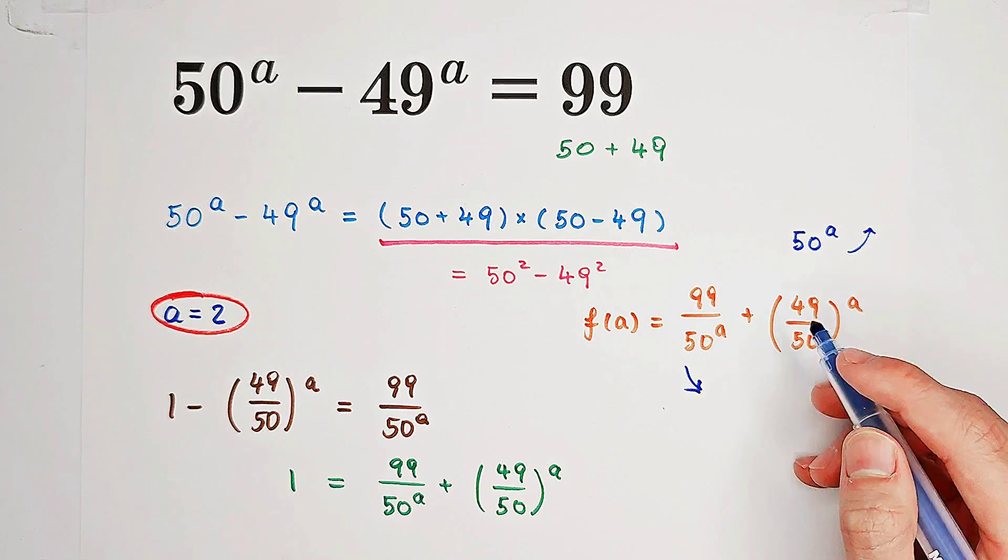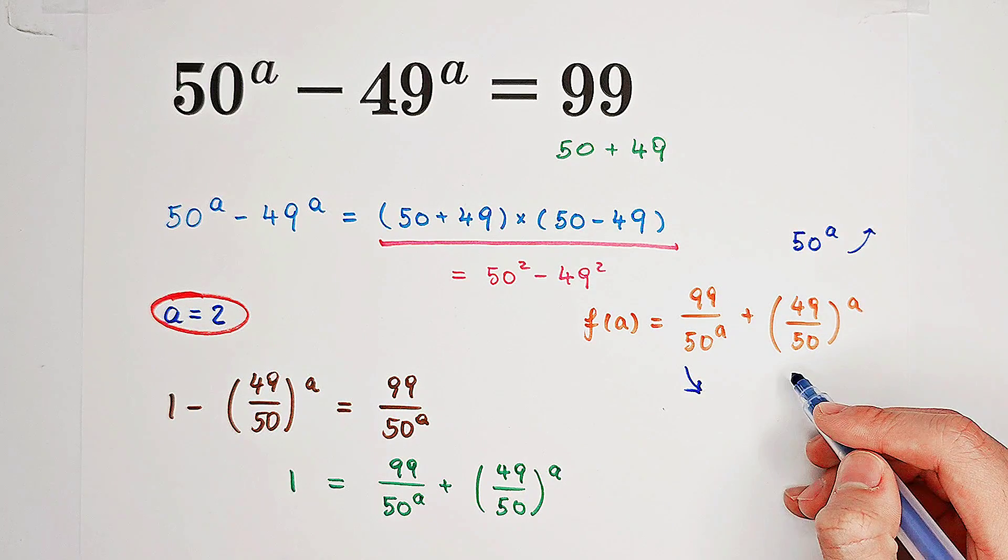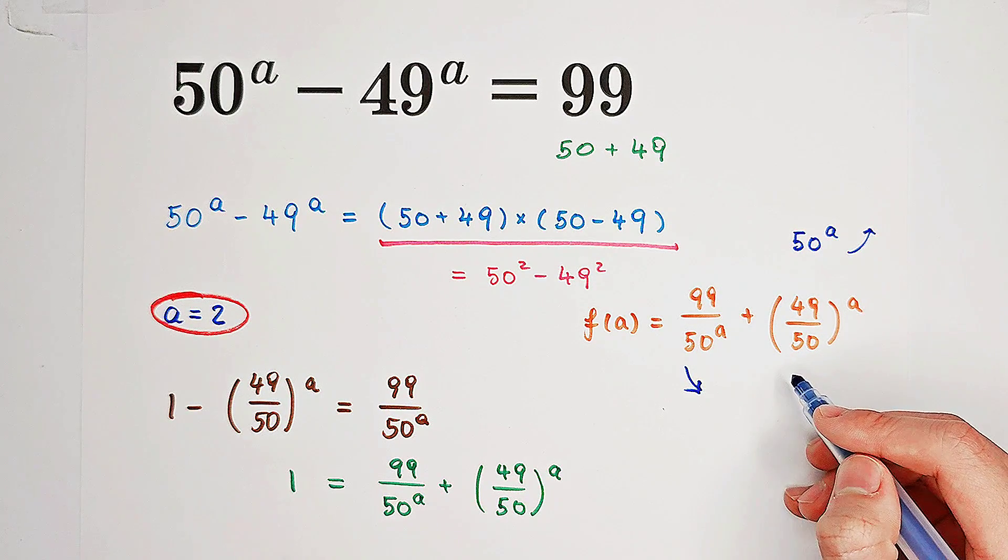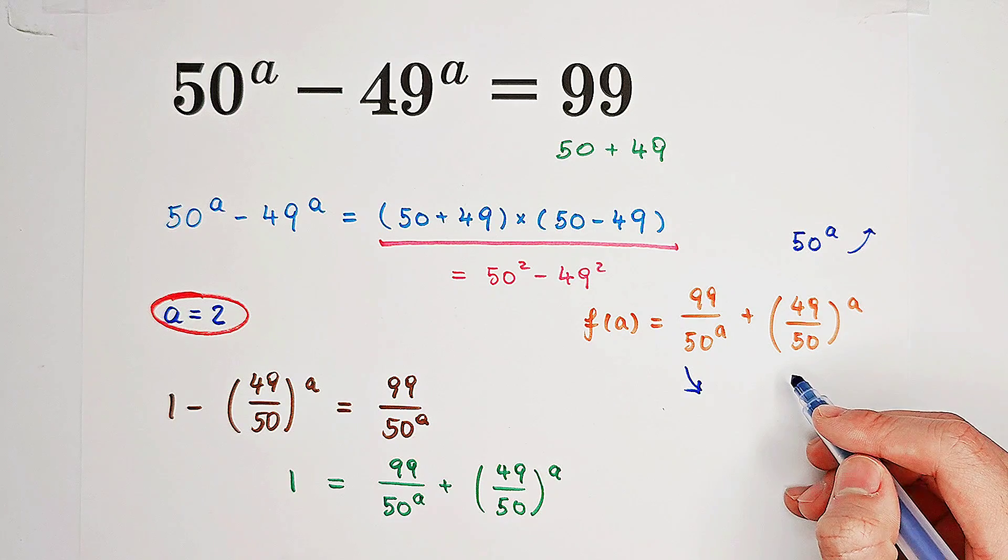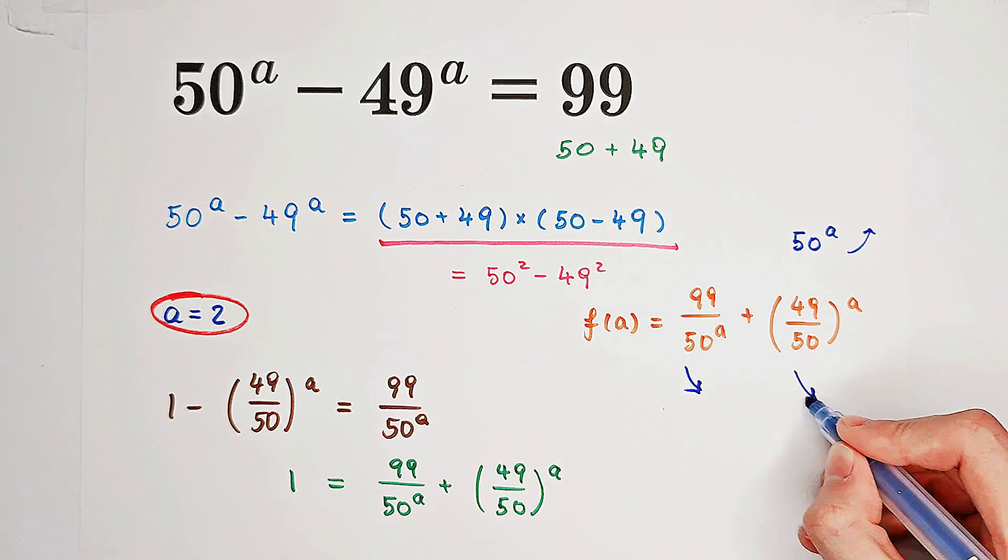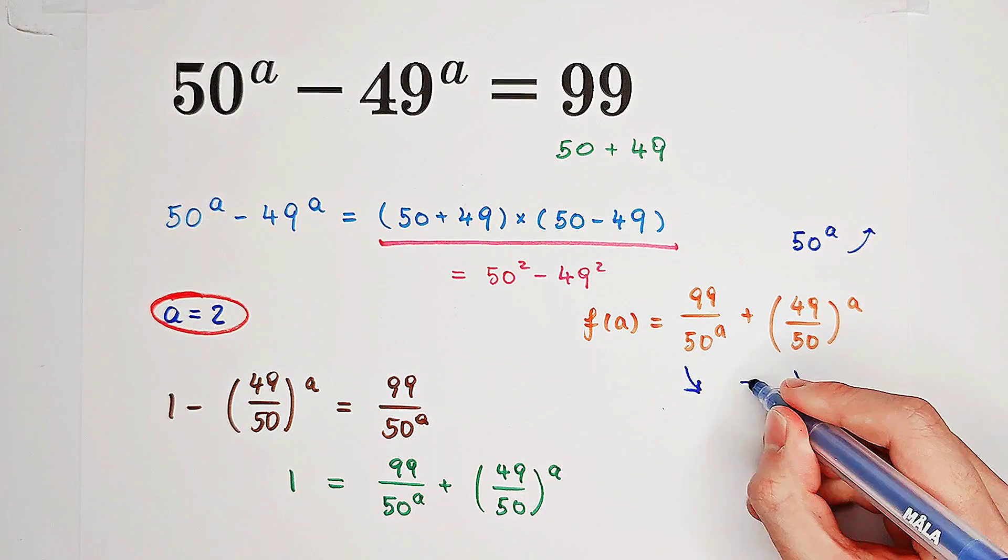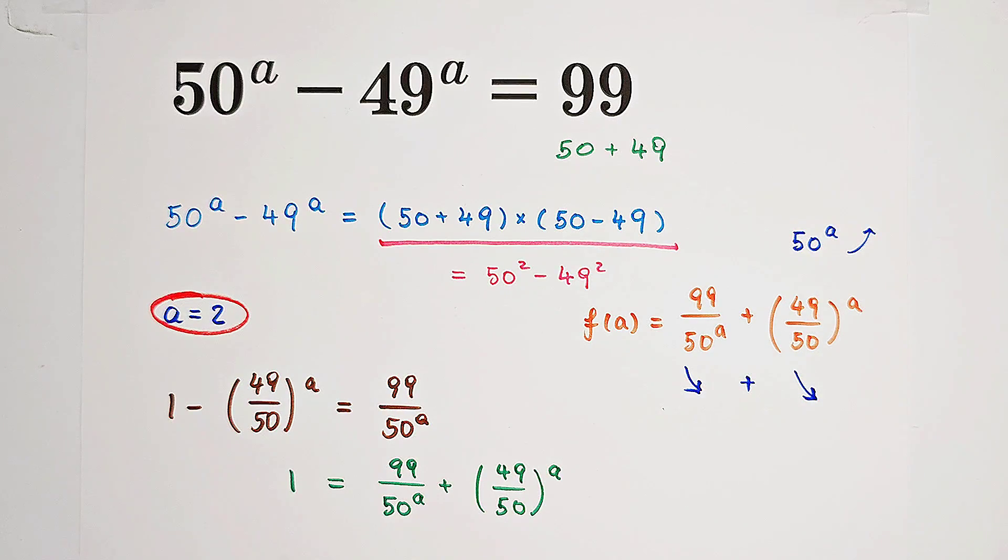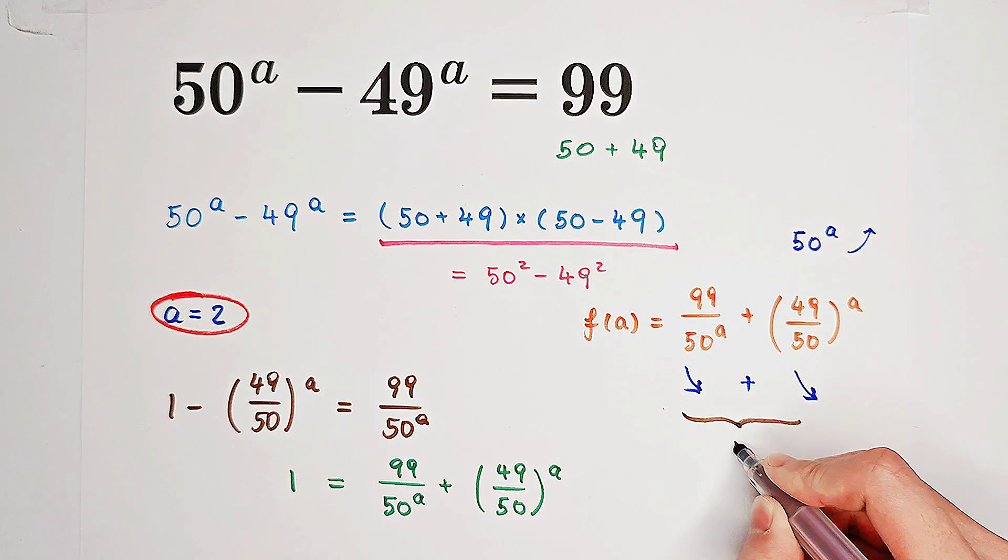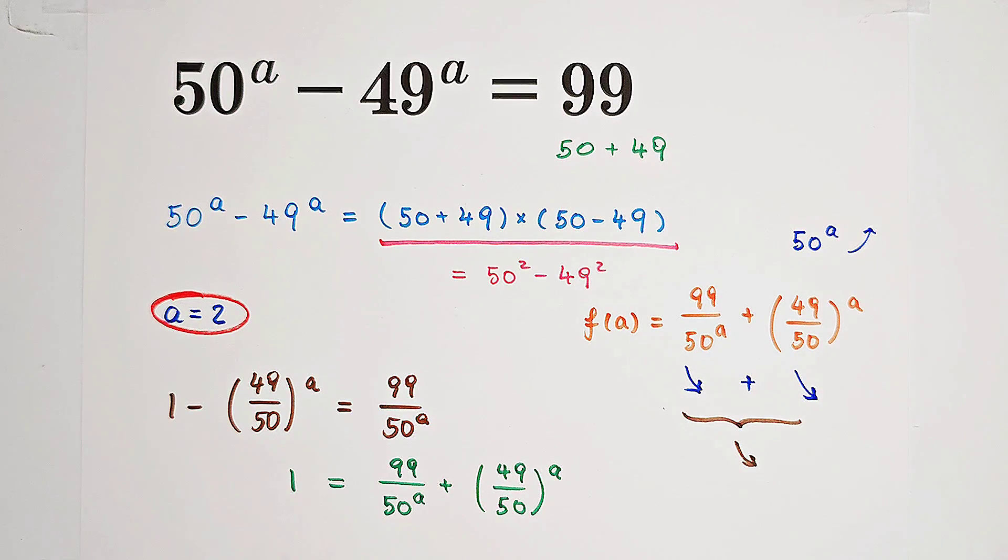49 over 50 is between 0 and 1. If the base is between 0 and 1, then this exponential function will also be decreasing. So, a sum of two monotonically decreasing functions is also a decreasing function. So, f of A is decreasing.